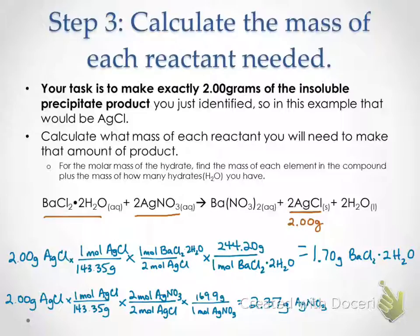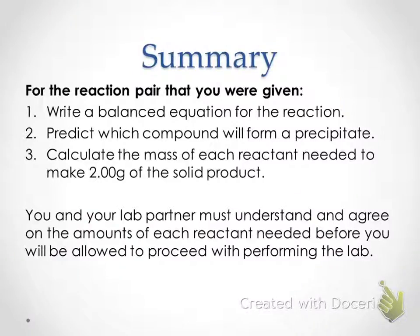So if you can see in summary, with the reaction pair that you were given, write the balanced equation, predict which compound will form the precipitate, calculate the mass of each reactant needed to make 2 grams of the product, and then you're not going to be allowed to do the lab until you and your lab partner understand the math and agree on the amount of each reactant that you need. So hopefully this helped, and we'll see you in class.